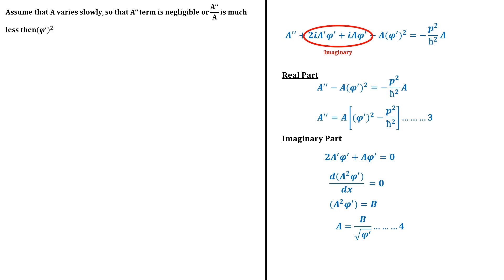So we equate A'' to negligible 0. In this case, solving this equation gives φ equals plus minus 1 upon h cross integration p dx. When φ is put back in equation 4, the value of amplitude A is found in terms of the momentum. Putting both solutions back into equation 2, we get the general approximate solution.